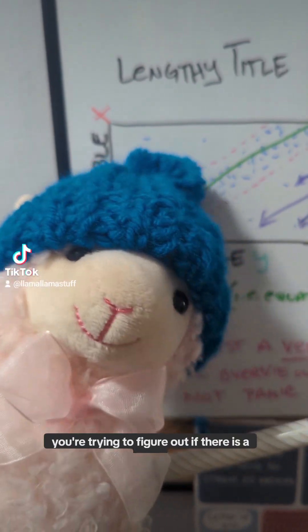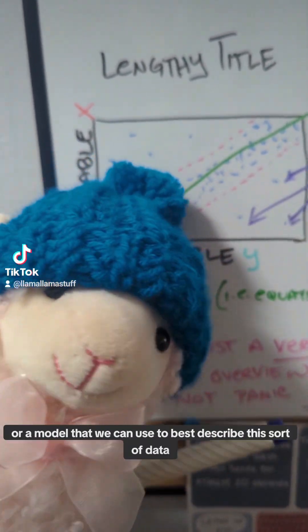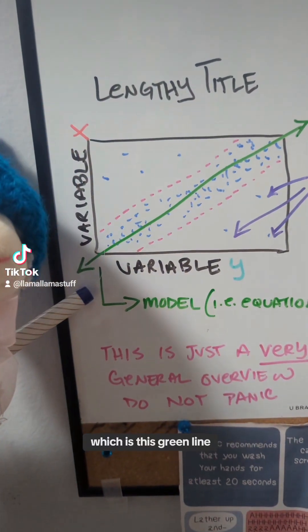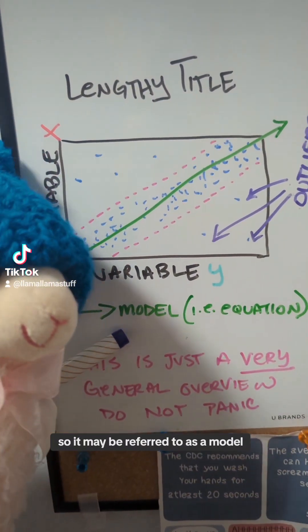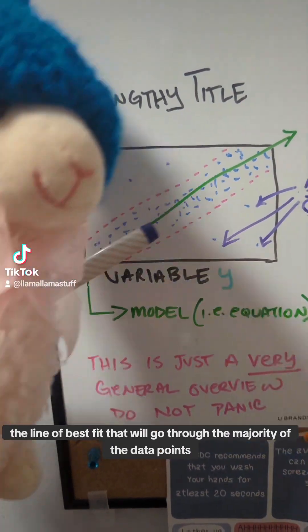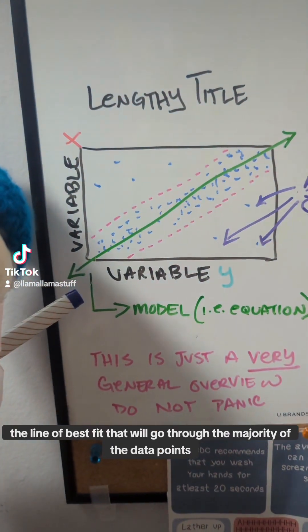You're trying to figure out if there is a line or a model that we can use to best describe this sort of data, which is this green line, so it may be referred to as model. That's basically the equation. You're looking for the line of best fit that will go through the majority of the data point.